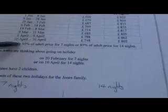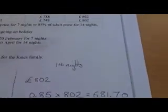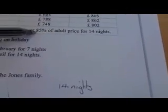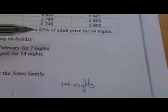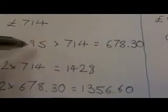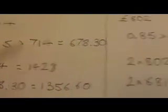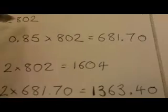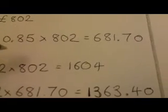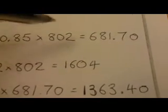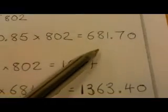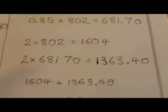So looking at my table, 10th of April to the 30th of April. For 14 nights it's going to cost me £802 for an adult. The child price is 85% of the adult price for 14 nights. So here when I found 95% I did 0.95, the multiplier for 95%. On this side I'm doing 0.85, the multiplier for 85% times by 802 to get me 85% of 802, which is £681.70.